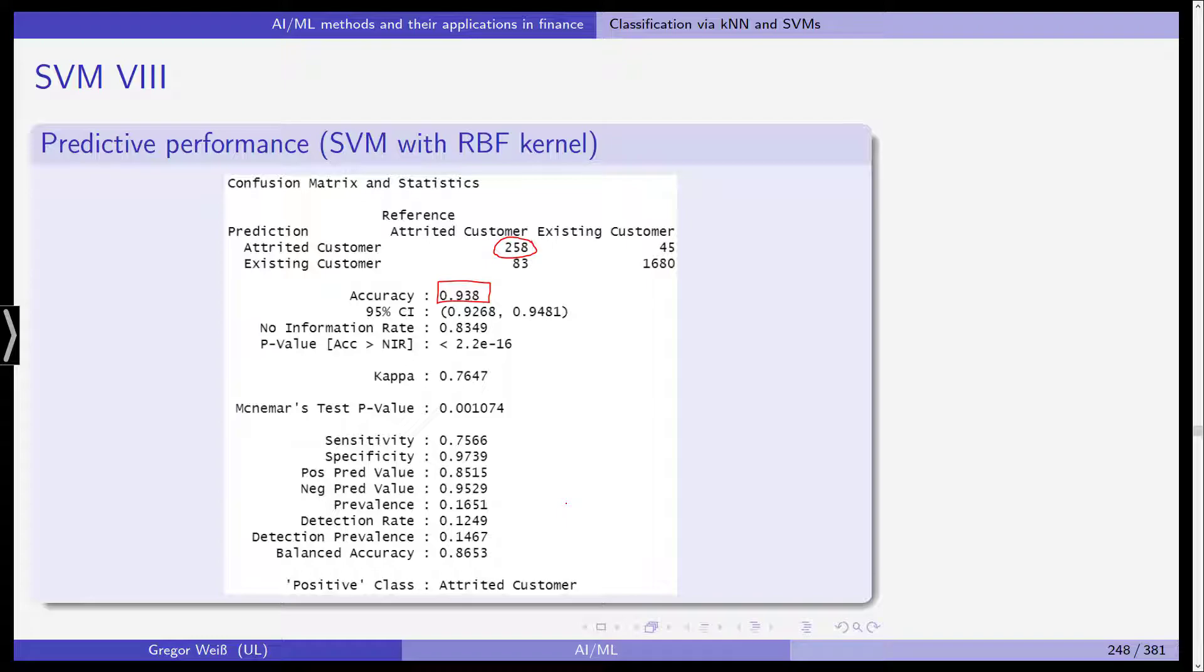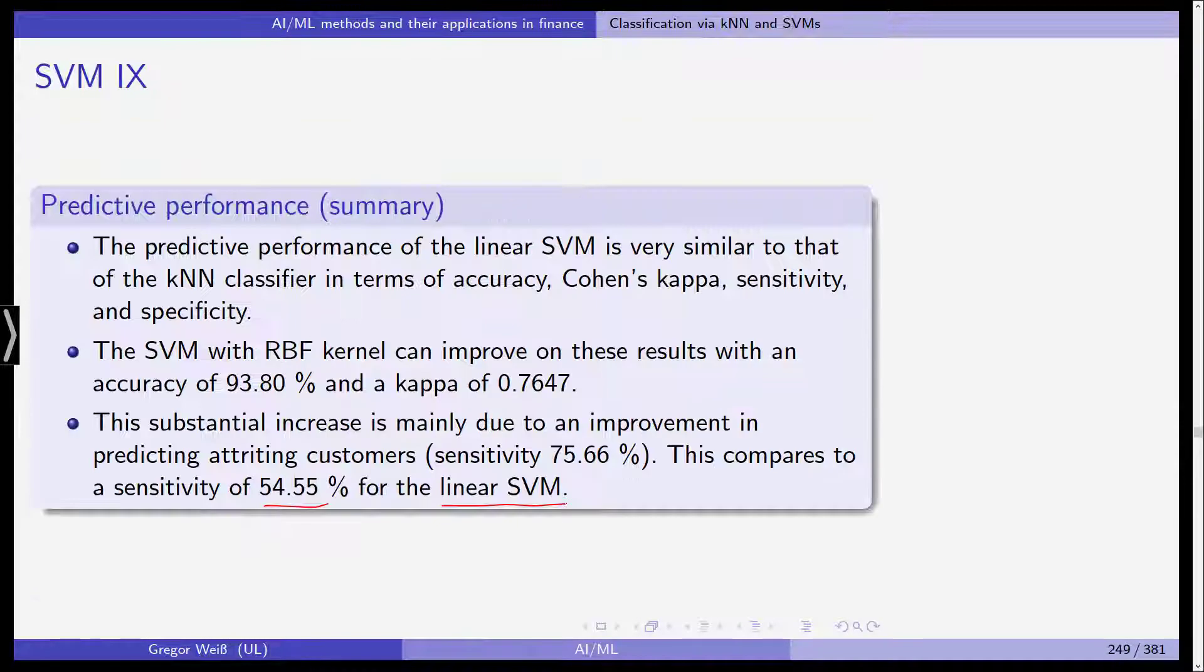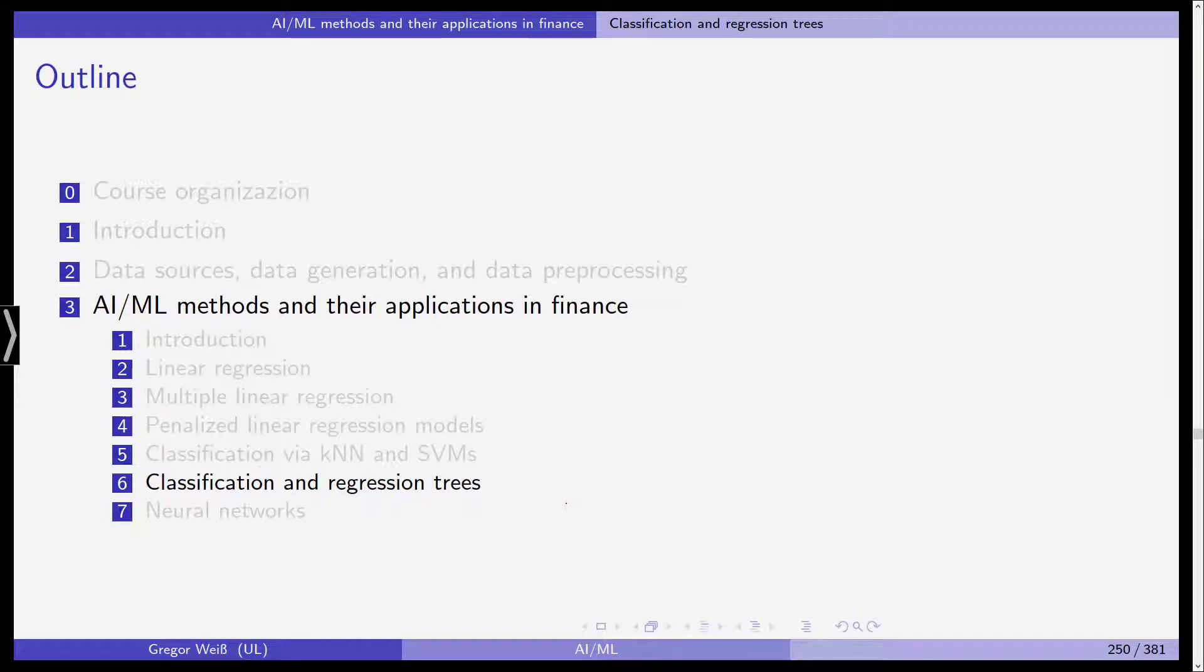So yes, using a non-linear model here makes sense and it allows us to increase the sensitivity and in result, the accuracy of our forecasting. So this is the example for classification and in the next subsection, we want to look at regression trees.